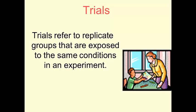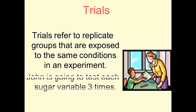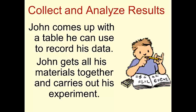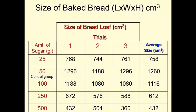The trials. As I mentioned, we are going to go by the means of doing three trials. You should conduct the experiment three different times or have three groups of the experiment going on at once. John is going to test his sugar variable three times as well. So, he comes up with a table that he can use to record his data and he gets his materials together and carries out his experiment. Here are the results that he came up with.